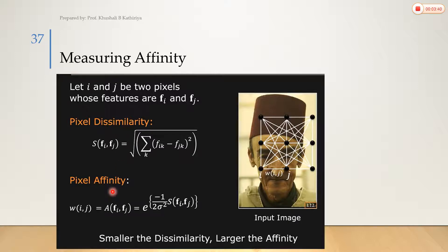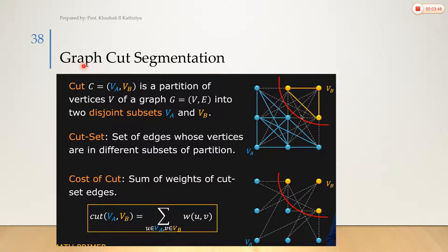Now we discuss graph cut segmentation. First, let's understand how to cut a graph. Suppose you have edges of weights 3, 5, 6, and 1. If you have two subgraphs VA and VB, and you cut between them — whatever edges connect these vertices across the two subgraphs, you cut those.